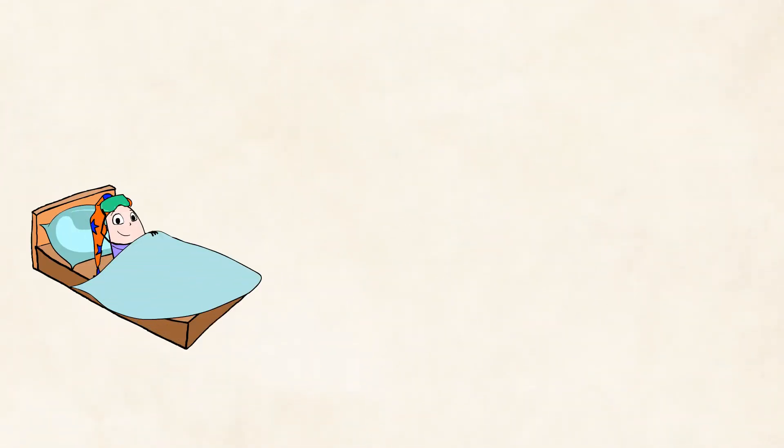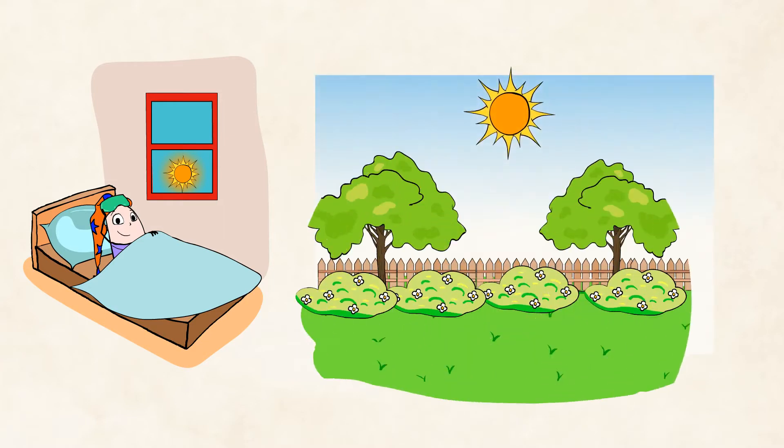When you wake up in the morning, the sun is probably starting to rise in the sky, and it's not very bright yet. As the Earth spins throughout the day, the sun appears to move higher in the sky, and we see more and more of its light.